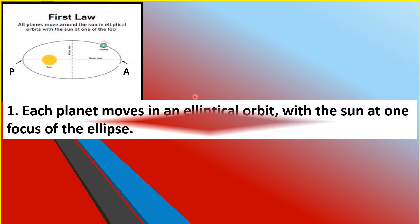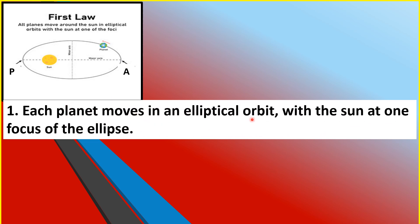The first law states that each planet moves in an elliptical orbit with the Sun at one focus of the ellipse. As you can see in this illustration, any planet that revolves around the Sun follows an elliptical orbit. An ellipse has two foci and the Sun is located at one focus. When the planet is farthest from the Sun, that point is what we call the aphelion, and when it is nearest the Sun, we call it the perihelion.